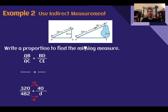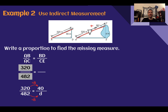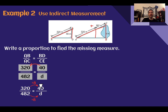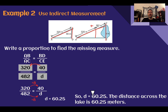Let's write a proportion to find the missing measure. AB is 320, and AC is the combination of both segments: 320 plus 162 equals 482. The ratio is 320 to 482, so that whole distance must be taken into account. For BD, the height was 40 and we want to know the distance. Since 320 divided by 8 is 40, if we do 482 divided by 8 we get 60.25. So the distance across the lake is 60.25 meters. Indirect measurement gives us a good estimate of the overall distance.